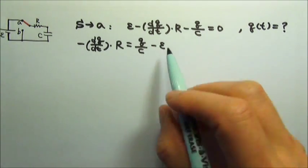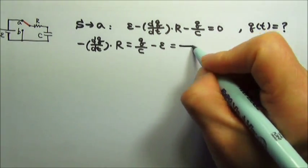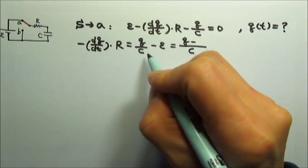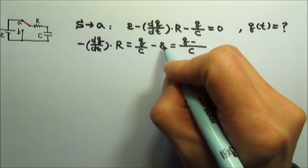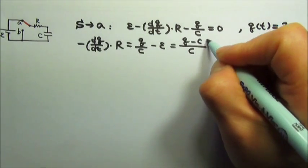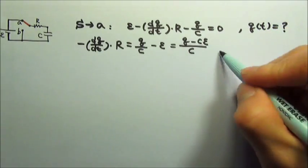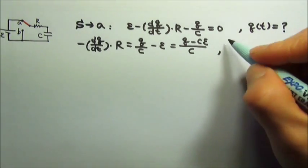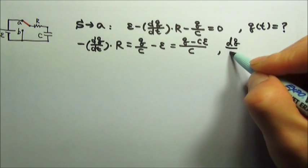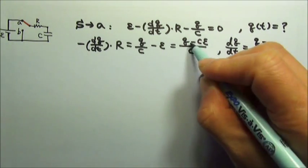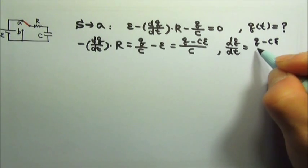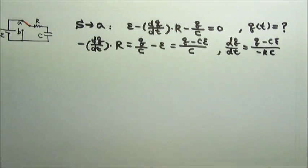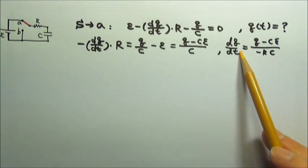I can combine these two terms to find their common denominator, C. And then on the top, I'll have q minus, this will become Cε over C, so this is minus Cε. And then I can divide by negative R on both sides. So I get dq/dt equals to q minus Cε divided by negative RC. Now we have the dq/dt.